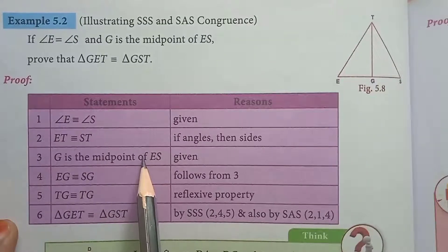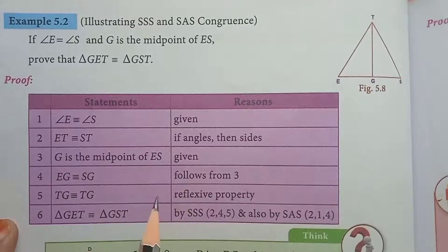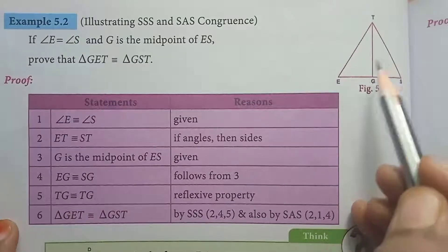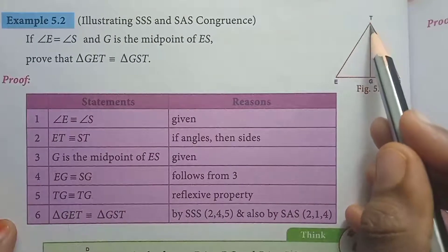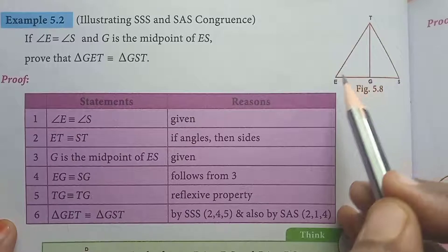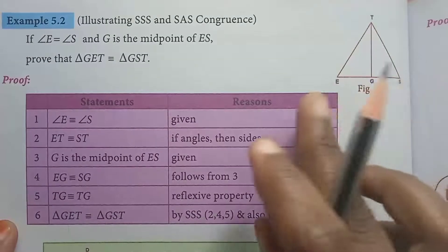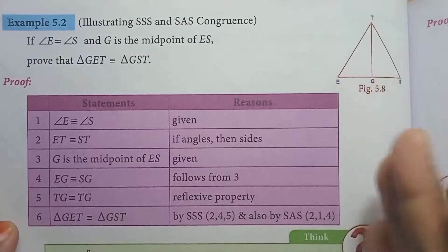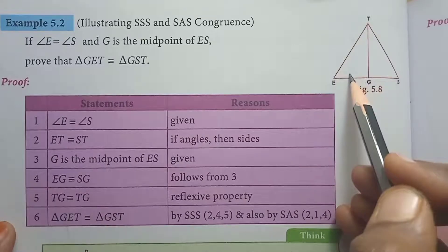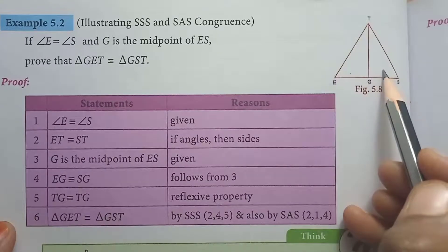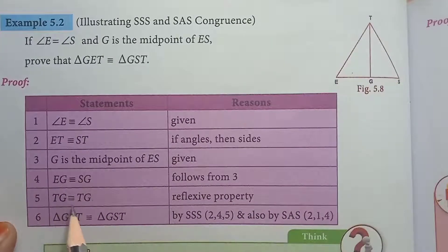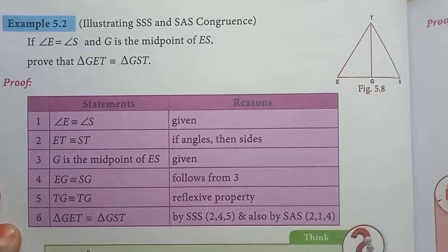Third given statement which we follow: TG is congruent to TG. This side TG is common to both triangles. This is the reflective property. In the two triangles, the midpoint merges, so TG is a side of both triangles — that is why TG congruent to TG. Now, the given statements are clear.